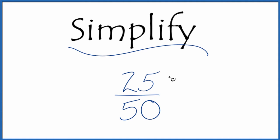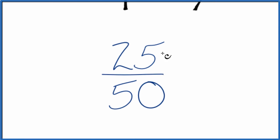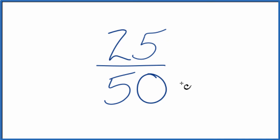Let's simplify the fraction 25 fiftieths. And here's what we're trying to do. We want to find another fraction that's equivalent to 25 divided by 50, it's just that we've reduced it to its lowest terms.